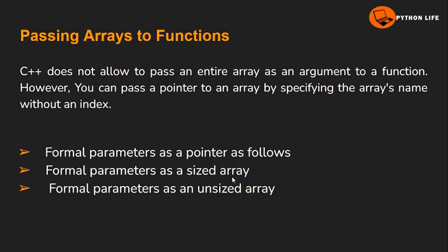For the formal parameter as an unsized array, it is similar to the sized array, but we do not mention the size. This is: void, function name, and asterisk parameter array without a specified size. So these are the three ways of passing arrays to functions.